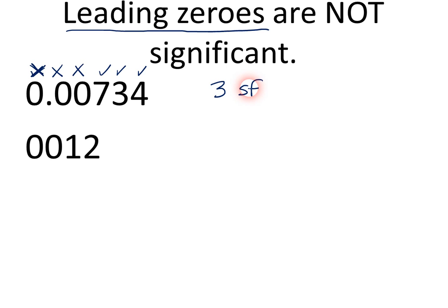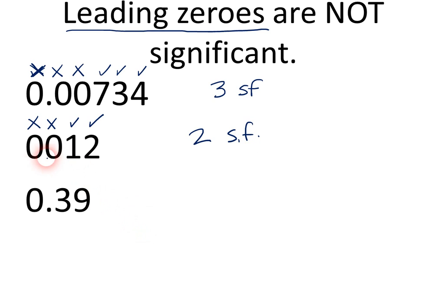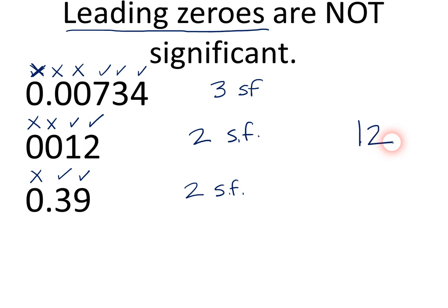The next example: 0012. Well, this is not the way most people write the number 12 — that looks a little goofy. Those leading zeros are not significant and they really don't have to be there. So, we have two significant figures: just the 1 and the 2. Here's another example: 0.39. That leading zero doesn't really have to be there — it's not significant. The 3 and the 9 are significant, so that number has two significant figures.